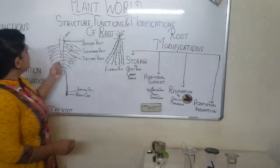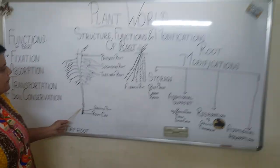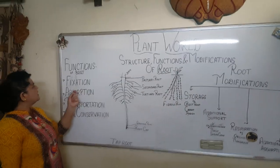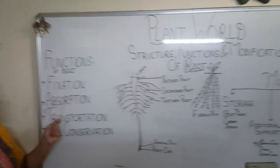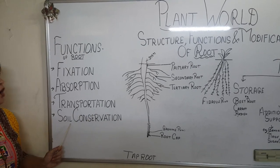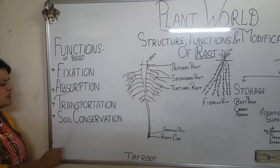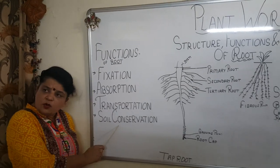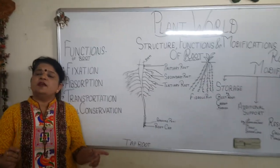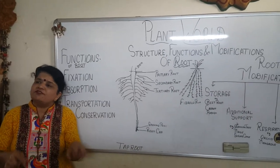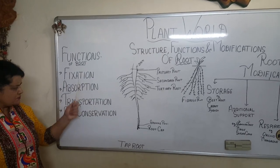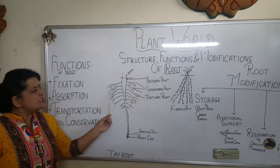Now the question arises about the functions of the root. Root fixes the plant to the soil — that is fixation. Another function is absorption. It also does transportation. Then there is soil conservation, which means it protects the soil from getting eroded — a good soil will not be blown away with the wind and will not be washed away by water because the roots hold the soil firmly.